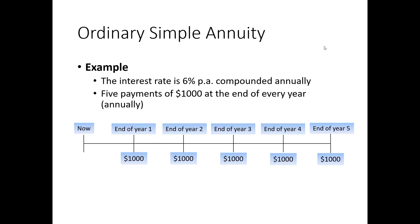Here's a picture to show what this looks like. We have an interest rate of 6% per annum, compounded annually, with five payments of $1,000 at the end of every year. Today is time zero; at the end of year one we get $1,000, end of year two $1,000, end of year three $1,000, end of year four $1,000, and end of year five $1,000. Regular intervals, same amount — $1,000 each time. We have ourselves an annuity.